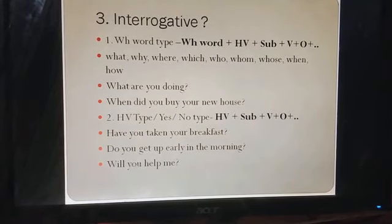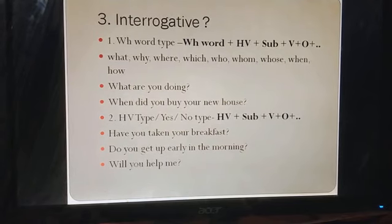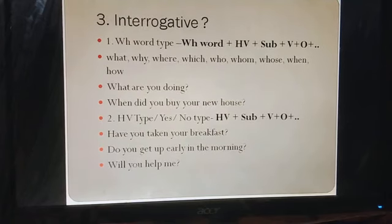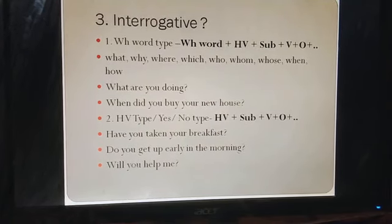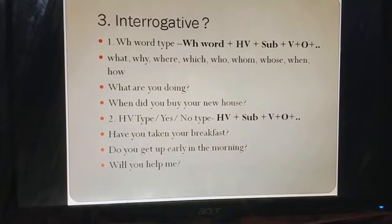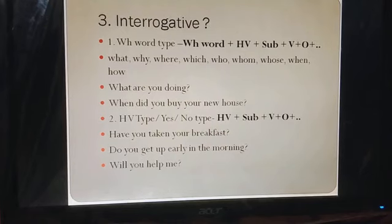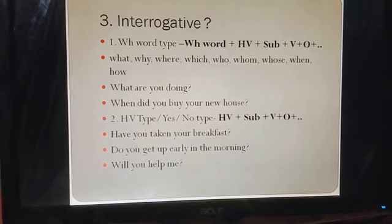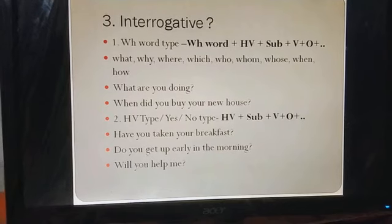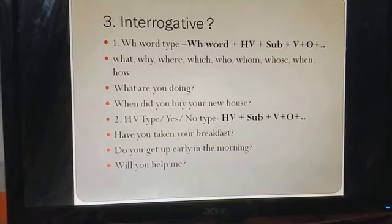इसकी दूसरी type है HV type, यानि helping verb type, जिसे yes-no type भी कहते हैं — क्योंकि इसका जवाब हमेशा yes या no में मिलता है। इसका structure: WH-word type में से WH हटा दें तो पीछे जो structure बचता है वो helping verb type का होता है — सबसे पहले helping verb, फिर subject, फिर main verb, फिर object, फिर adjunct. Examples: 'Have you taken your breakfast?' 'Do you get up early in the morning?' 'Will you help me?' — ये helping verb type interrogative sentences हैं।